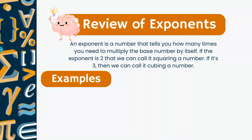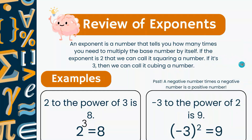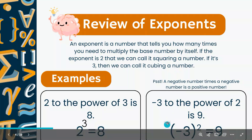Let's take a short review of exponents. An exponent is a number that tells you how many times you need to multiply the base number by itself. If the exponent is 2, we call it squaring a number. If it's 3, we call it cubing a number. For example, 2 to the power of 3 is 8, because 2 times 2 times 2 is 8. Also, negative 3 to the power of 2 is 9, because a negative number times a negative number is a positive number — so negative 3 times negative 3 is 9.